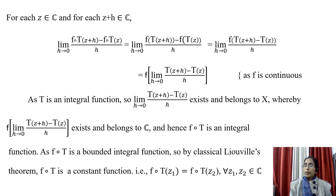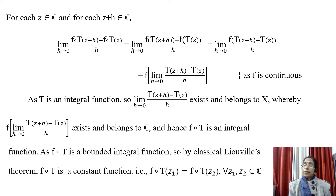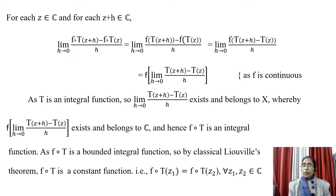Since T is a mapping from ℂ to X, this limit belongs to X. Therefore the image of this limit under f exists and belongs to ℂ, because f maps X to ℂ. Hence f∘T is an entire function, since the limit existing means the function is analytic at z. We have also proved that f∘T is bounded. So f∘T is a bounded entire function, and by the classical Liouville's theorem, f∘T is a constant function.